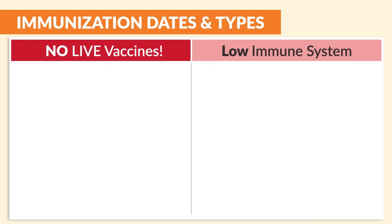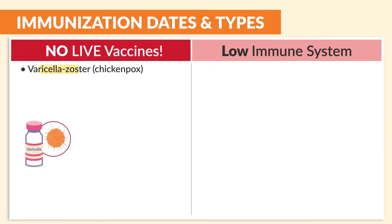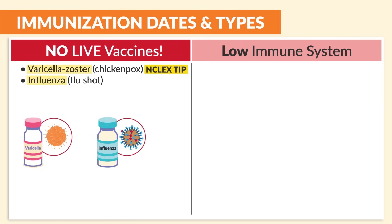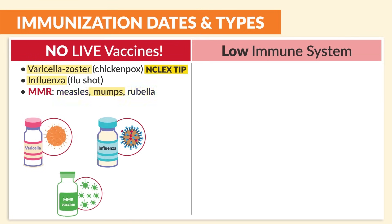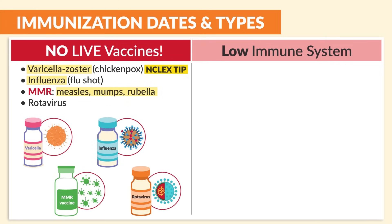Write down this list. The live vaccines include varicella zoster — a big NCLEX tip — influenza (also called the flu shot), MMR including measles, mumps, and rubella, as well as rotavirus.